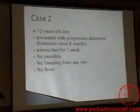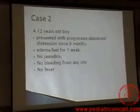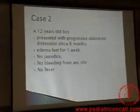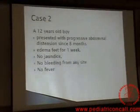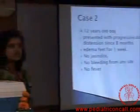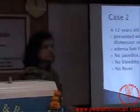This is the second case. He is a 12-year-old boy who presented with progressive abdominal distension for the last 8 months, gradually increasing. And now he has got edema. There is no jaundice, there is no bleeding from any site, there is no fever. He is just getting abdominal distension which is going on, and now edema.